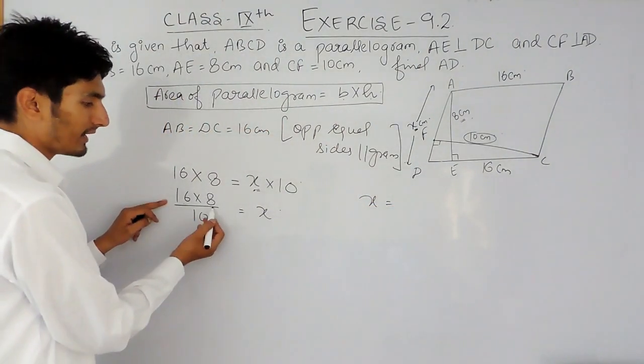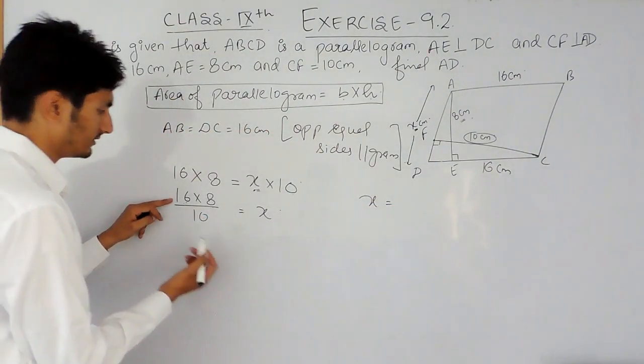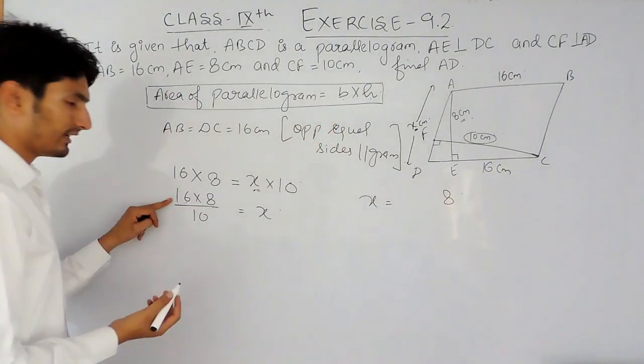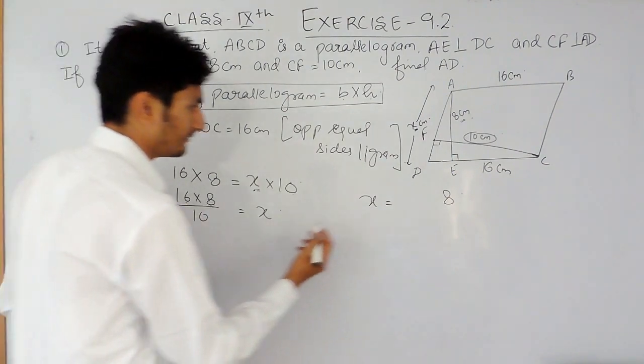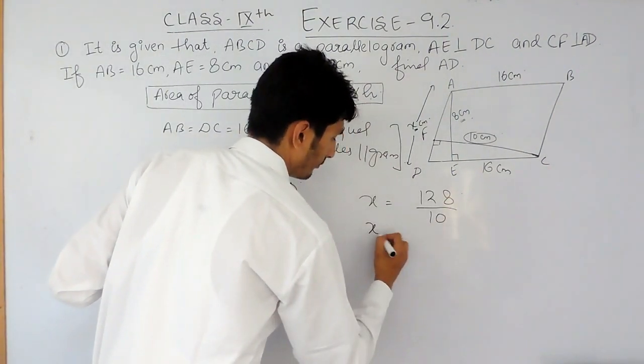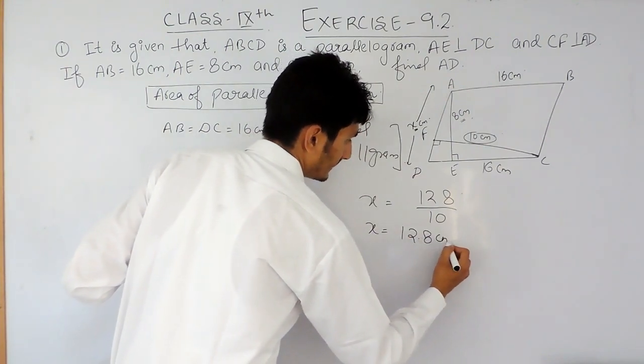16 multiplied by 8 is... carry 4, 8 ones are 8 and 4, 12, upon 10 and the value of x will be 12.8 cm.